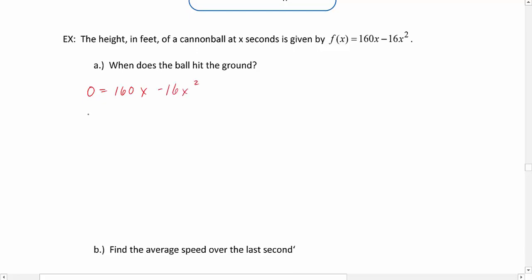We can factor out a 16x, leaving us with 10 - x. Then we'll set each of these factors equal to 0 and solve. We get x to be 0 and x to be 10.